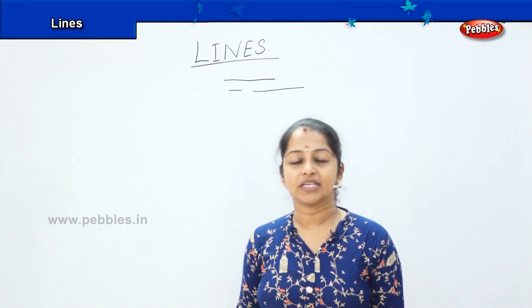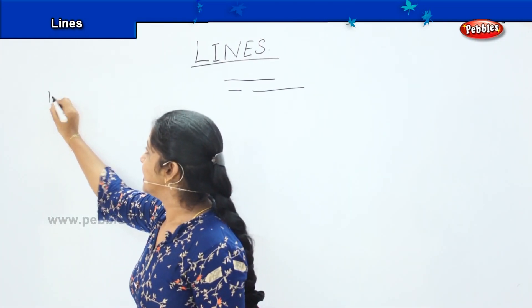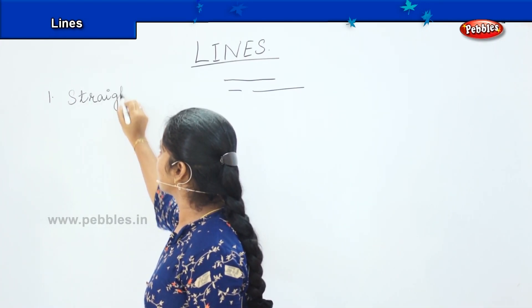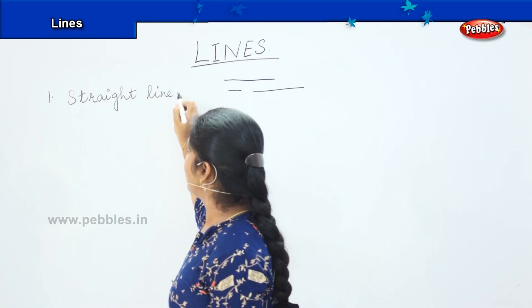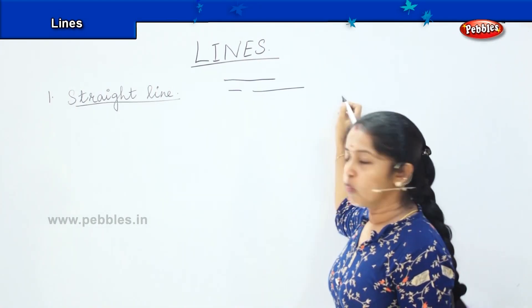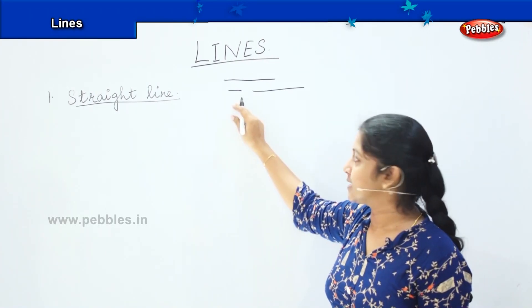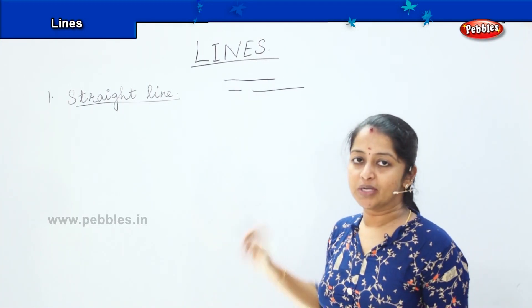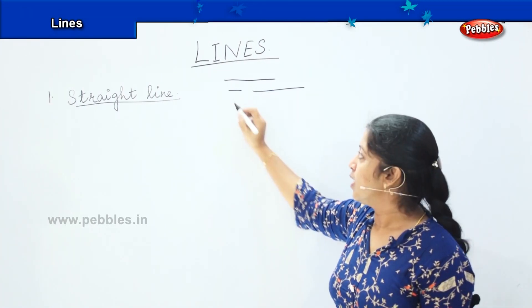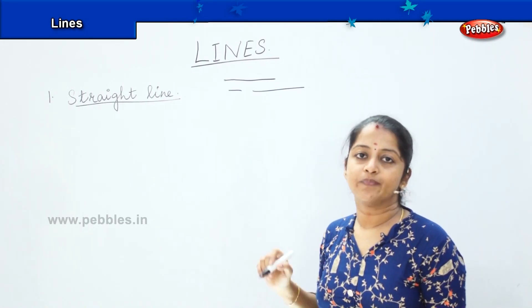We will now see what are the different types of lines which we use. The first one is the straight line. Any line which is drawn with a starting and an ending point on a straight, plain surface is called a straight line. You cannot see any curve in between — it just goes on a straight basis, and we usually use a ruler to draw a straight line.